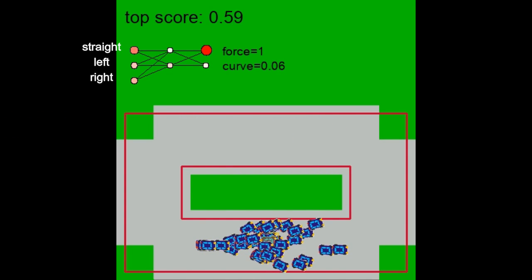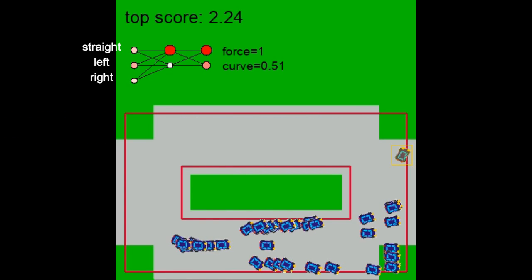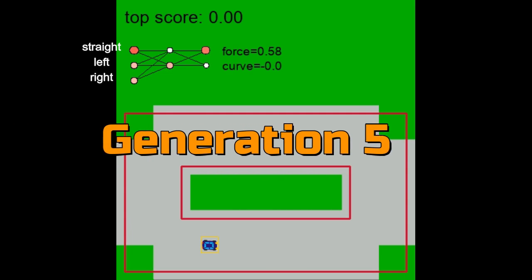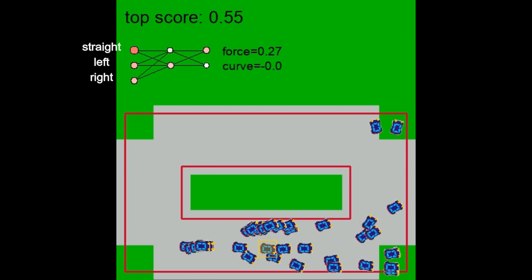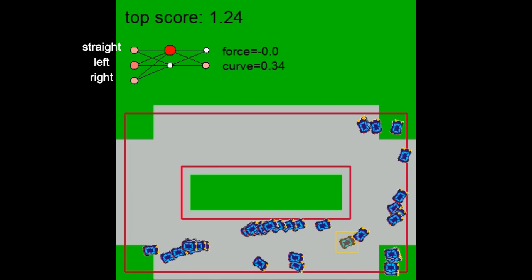Since our cars have no memory, they don't know about their current velocity. At first, the cars need to understand that it is good to drive forward and not backward. After a few more generations, almost all mutations are driving in the right direction. Some of them have even managed to overcome the first curve. And we have one outstanding performance. This will give great children in the next generation.